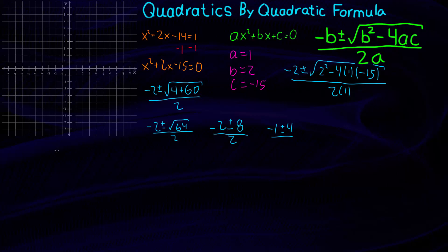So negative 1 plus 4, that's going to be 3. And for the other one, negative 1 minus 4, that's going to be negative 5. And so our two solutions are x equals 3 and x equals negative 5.